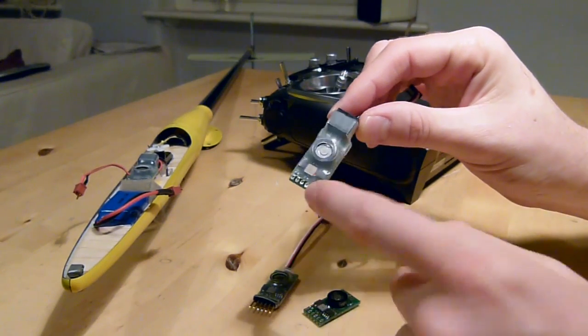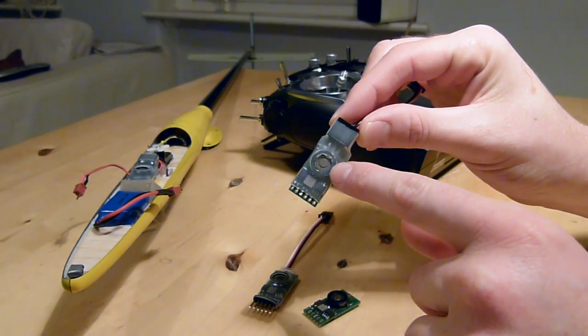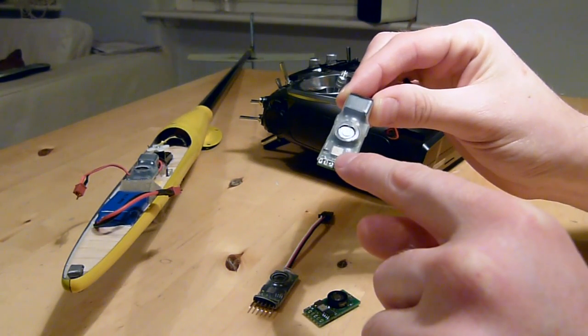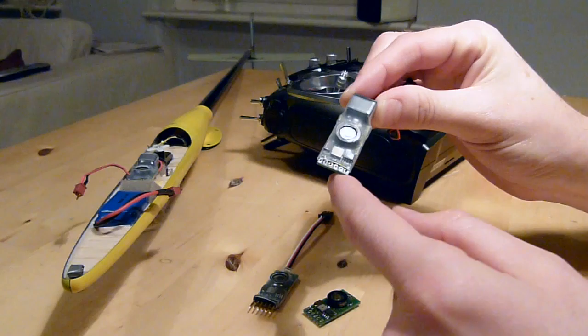It also has an integrated low voltage alarm, so this is a 90 decibel sounder, really loud, and it's also a logging altimeter, so this little silver chip here is a really sensitive pressure sensor.